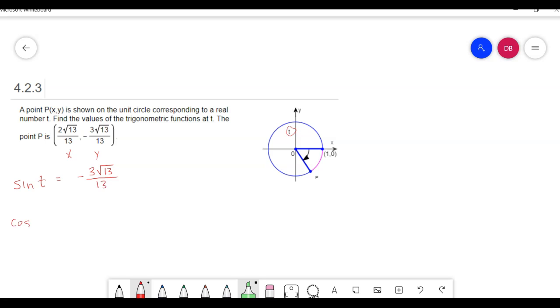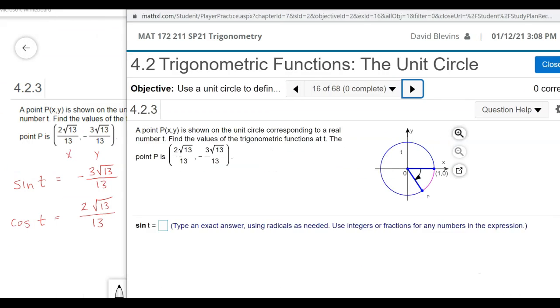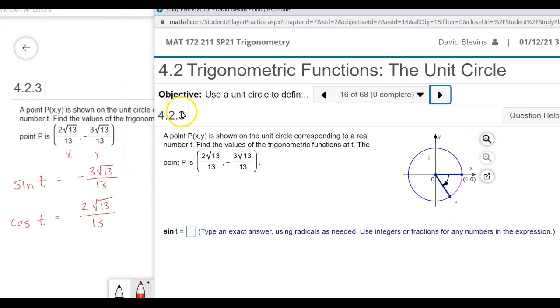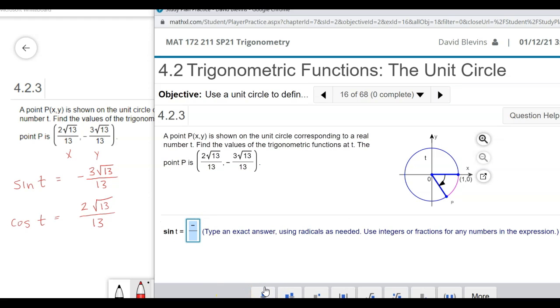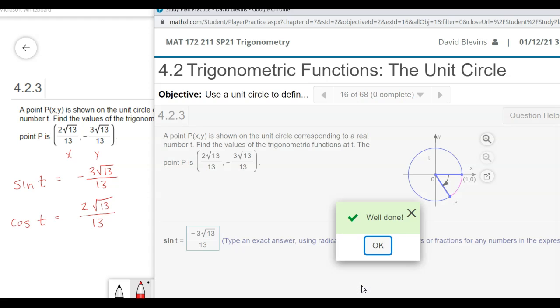Cosine is the x coordinate, so 2 square root of 13 over 13. Those are the two you can always get just by looking at the point coordinates. I'm going to pull this down here and plug in those two values. So fraction, negative 3, here's the square root button, 13. Okay, so there's our sine, and then for cosine, we'll get the x coordinate there.